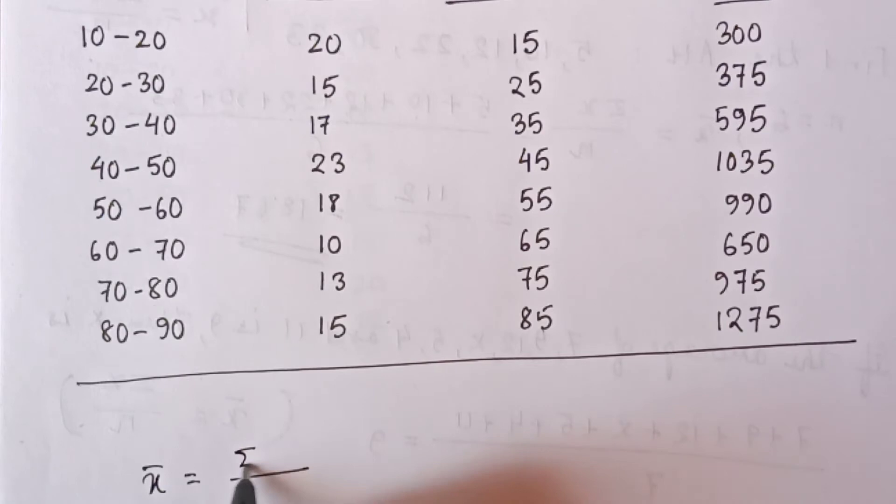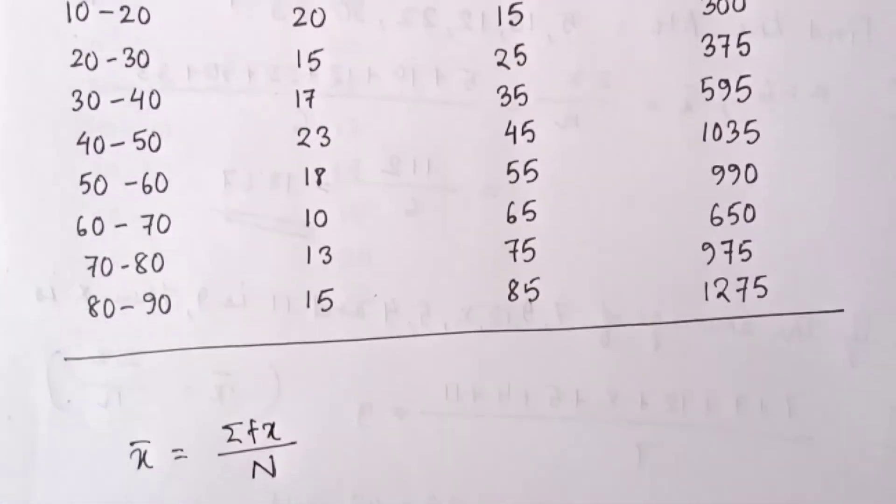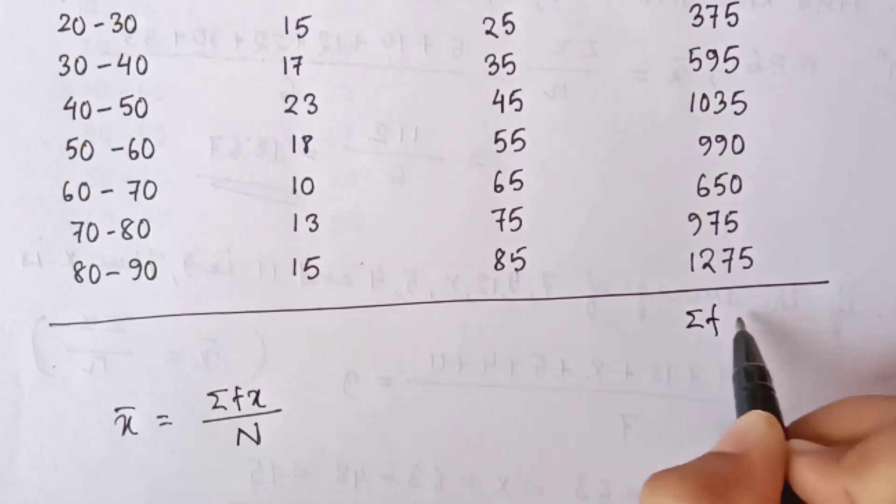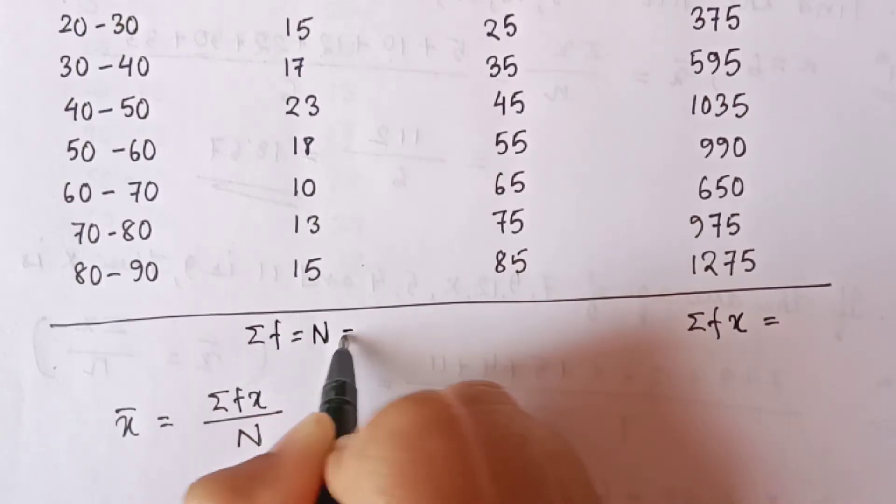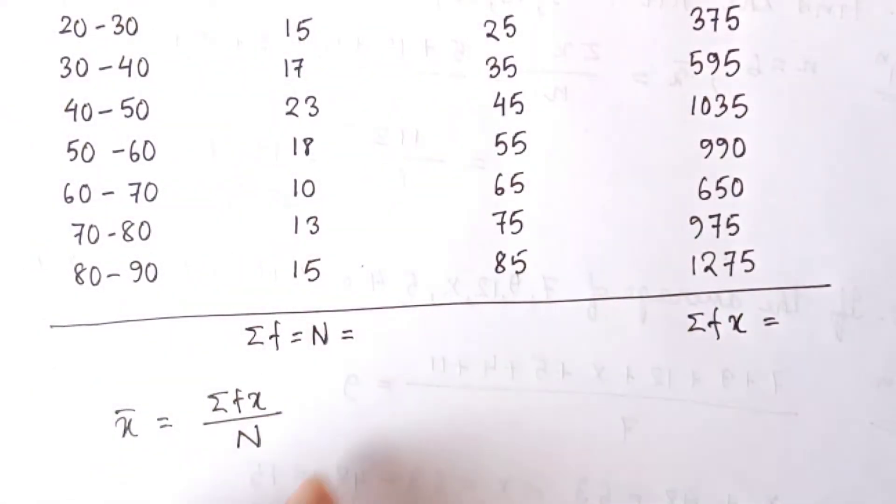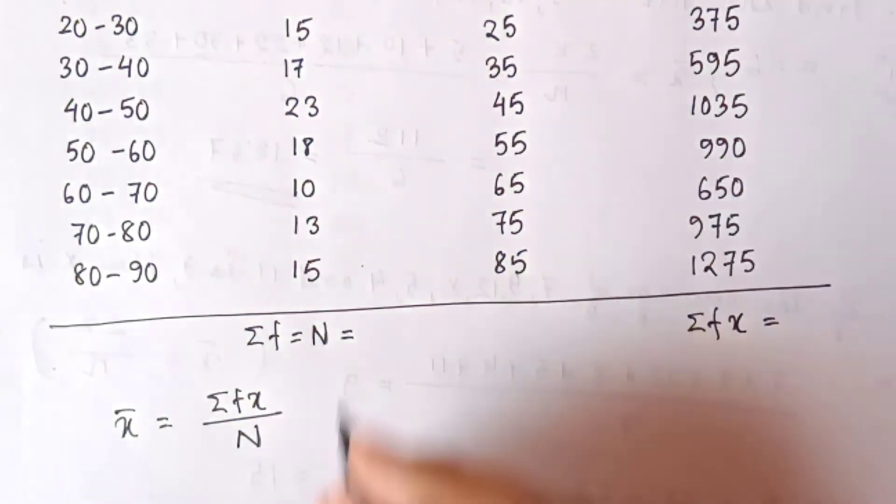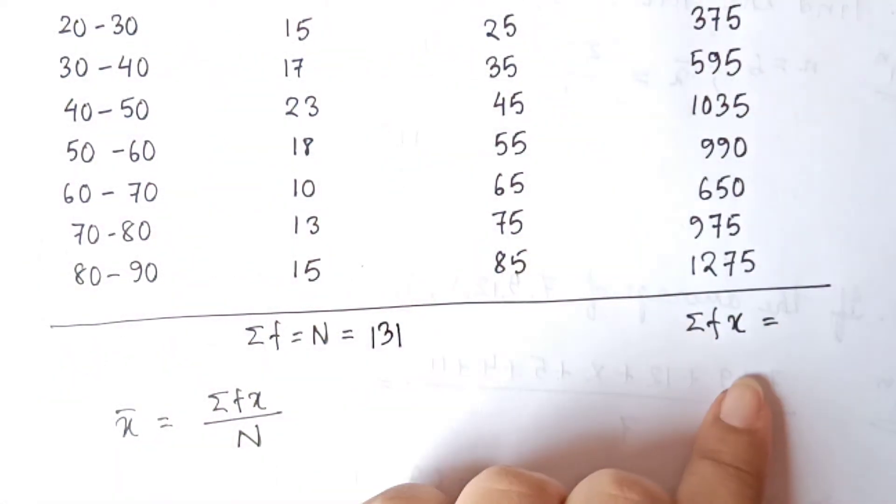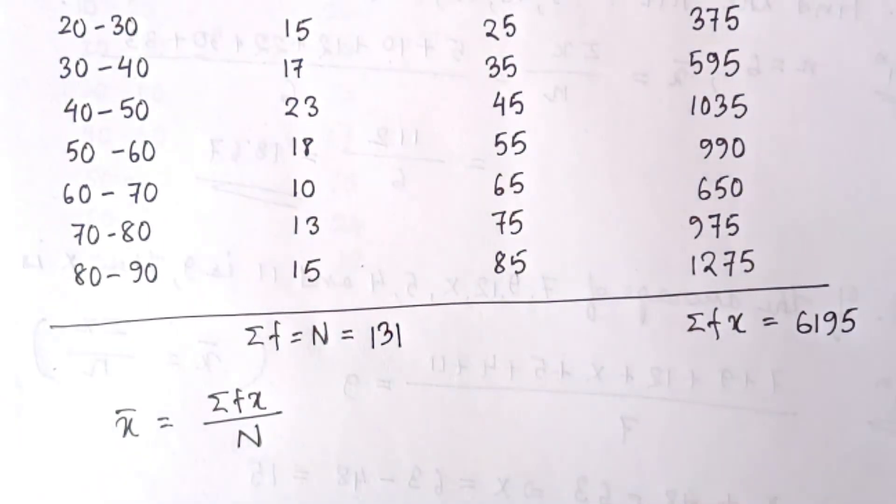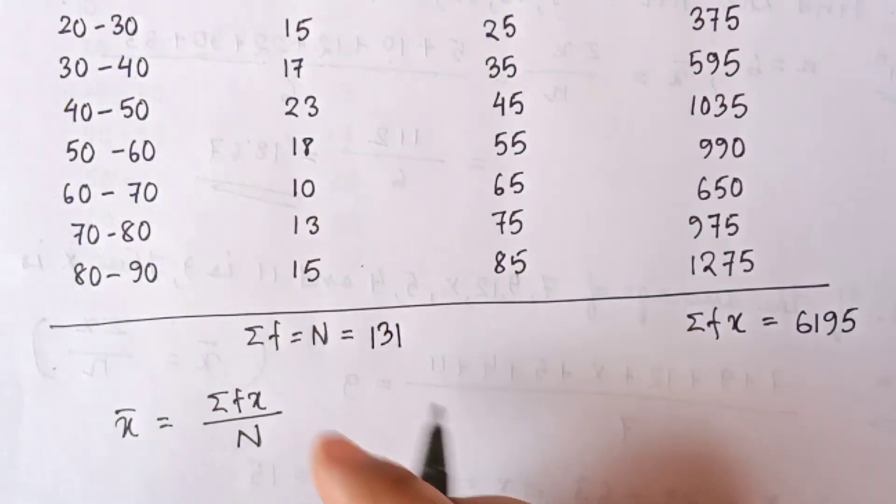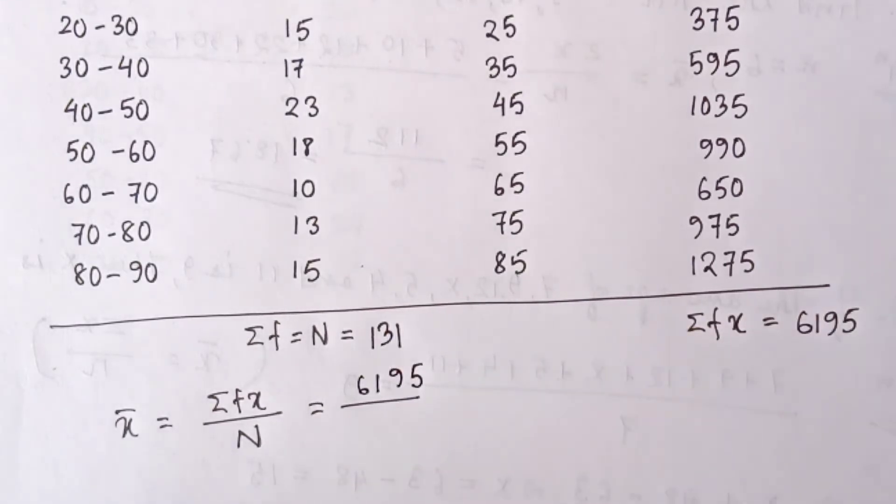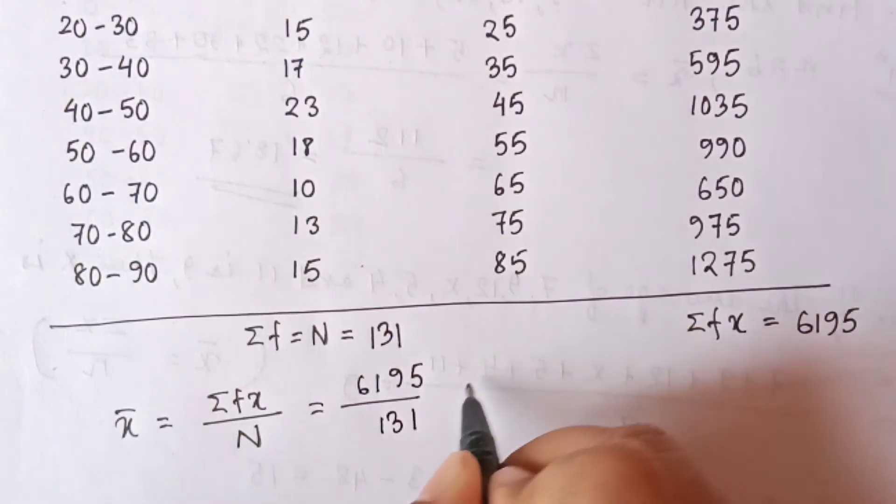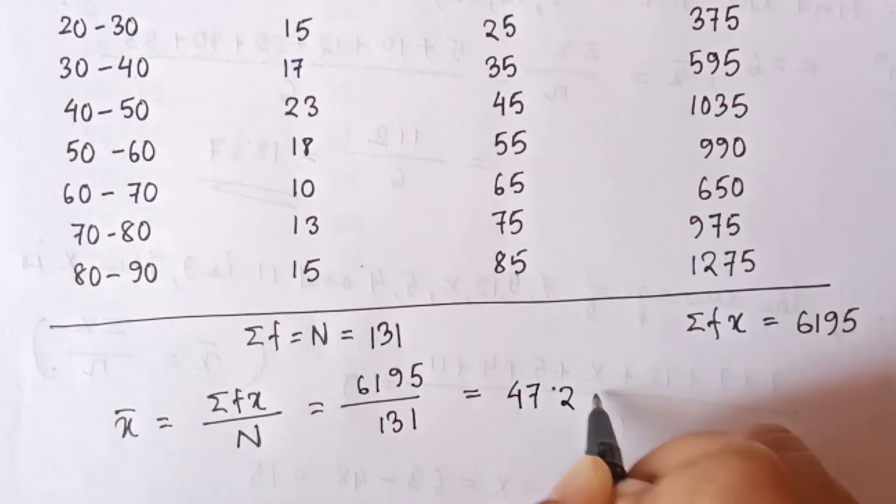Now we will find out the summation of F, which is also equal to N. Sum of F equals 131. Summation of FX equals 6195. Now just put the values into the formula: 6195 divided by 131, and the value is equal to 47.29.